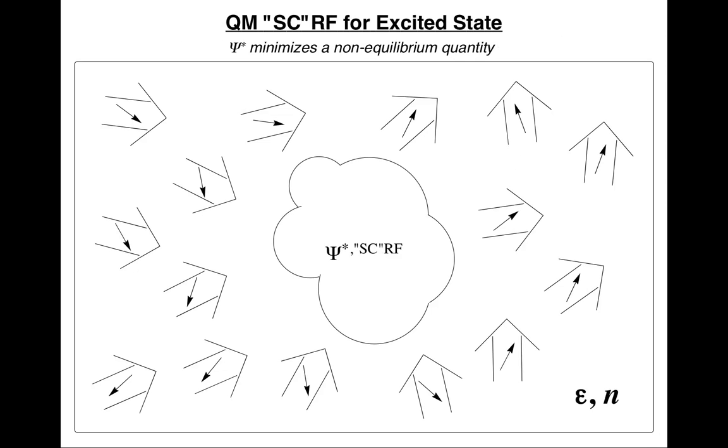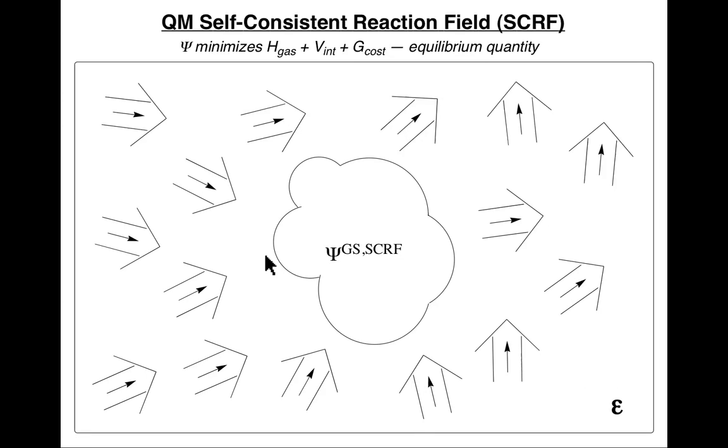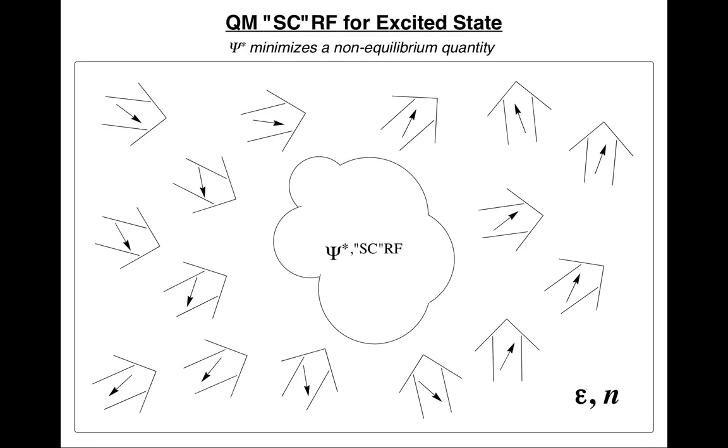So what happens in the excited state? We instantaneously, that is on the electronic timescale, go up to psi star, an excited state. I've put the self-consistent here (SC) in quotes, because on that timescale the only thing I have time to be self-consistent with is the electronic degrees of freedom. So you see all the little arrows have moved, the big arrows have not. If I take advantage of animation here and go back and forth, you see the big arrows aren't moving. The water molecules haven't had time to reorient, but the electrons can polarize in response to the electron moving to get to the excited state.